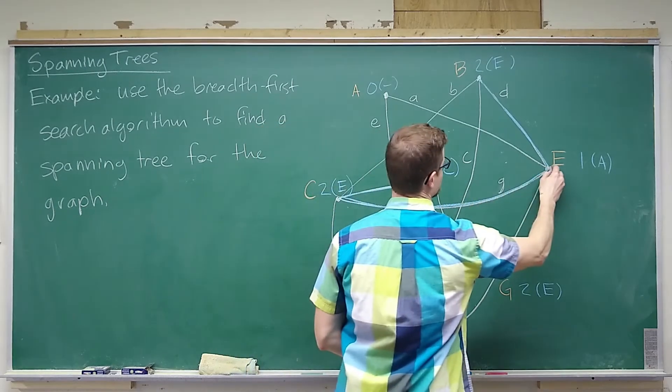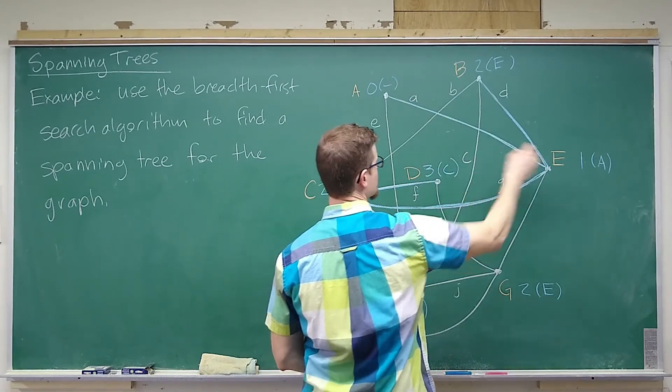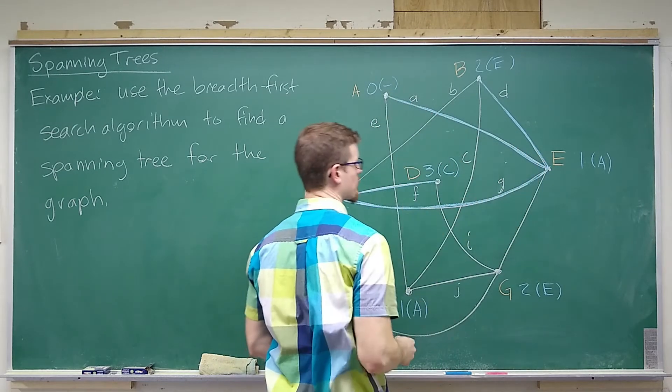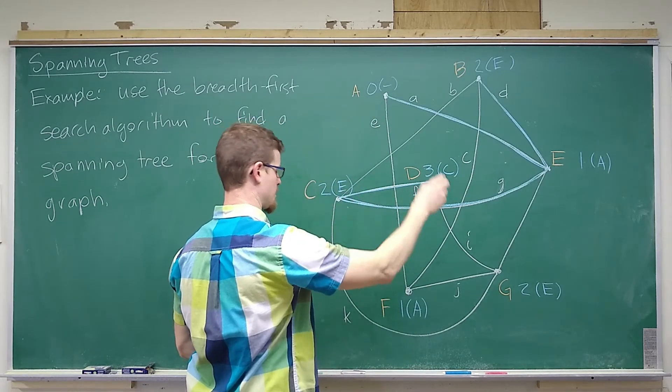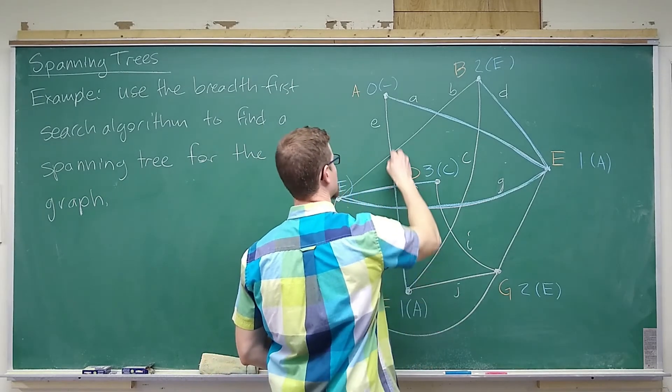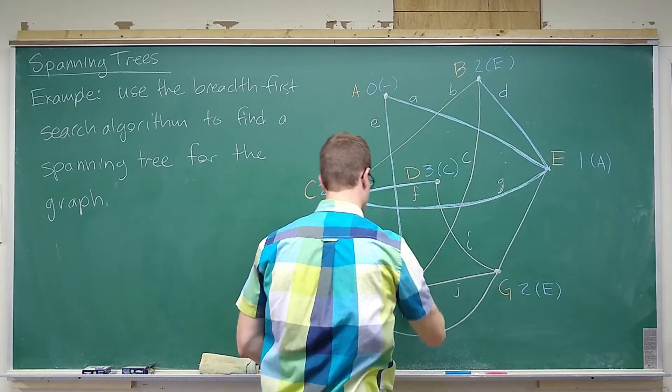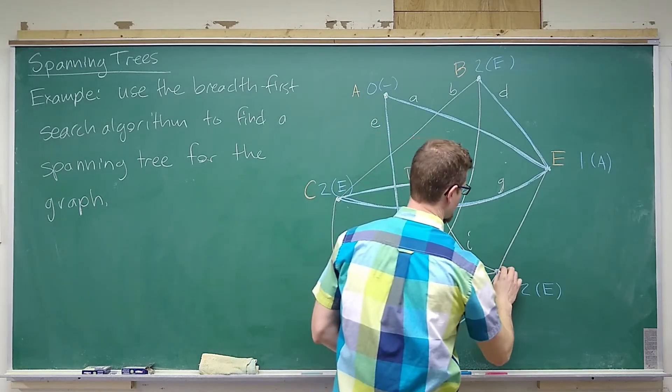E has predecessor A, so I'm just following along here, A, B, C, D, E, that's the pattern, if you will. E has predecessor A. And then down to F, F has predecessor A, so we can include this edge.